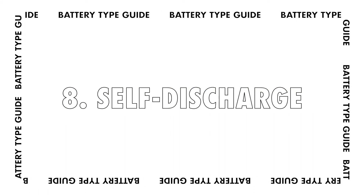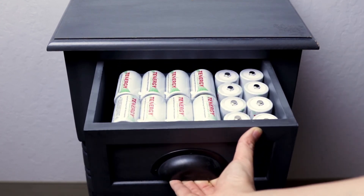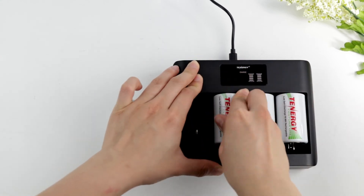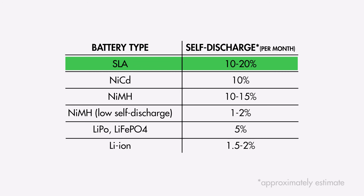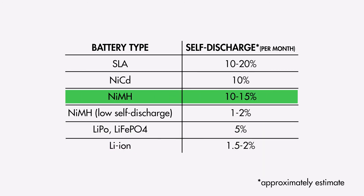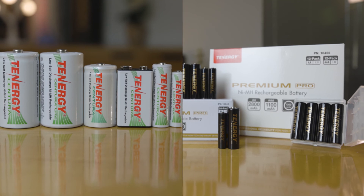The last difference is self-discharge rate — the amount of energy lost over time during storage. It's related to maintenance frequency: the higher the self-discharge rate, the more often you'll need to recharge the battery to avoid over-discharging during storage. Sealed lead acid batteries have a high self-discharge rate of about 10 to 20% per month and shouldn't be discharged over 50%, so recharge every 4 to 5 months. Lithium-based batteries have a self-discharge rate of around 1.5 to 5%. Some nickel metal hydride batteries have a high rate of 10 to 15% per month, but with newer technology, low self-discharge NiMH batteries — like the Centura and Premier Pope batteries — lose only around 15% of capacity per year.